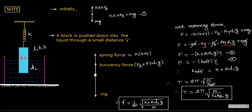From these two equations, k_effective is equal to k + A·dl·g, where dl is the density of liquid, A is the area of cross-section of that block, and g is acceleration due to gravity. Time period T equals 2π under root m by k_effective, therefore T equals 2π √(m / (k + A·dl·g)). If someone asks for frequency of oscillation, just take the reciprocal: frequency equals (1/2π) √((k + A·dl·g) / m). Please note this down properly.